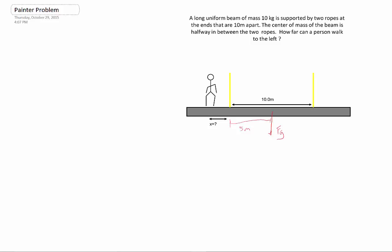So we also have the normal force here and the normal force here, which is going along that rope. And then, of course, we have the force of gravity, so the beam, and this is the force of gravity of the man.